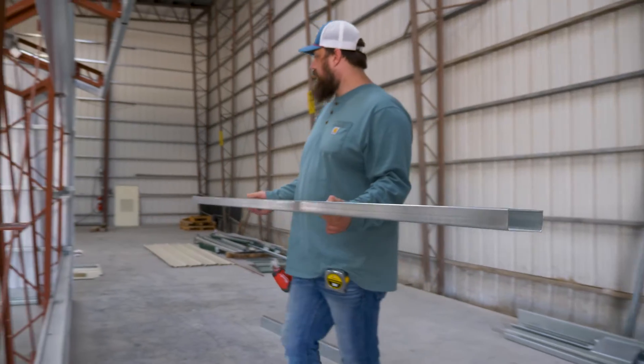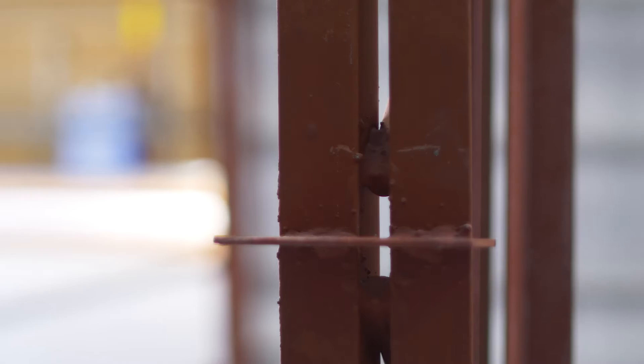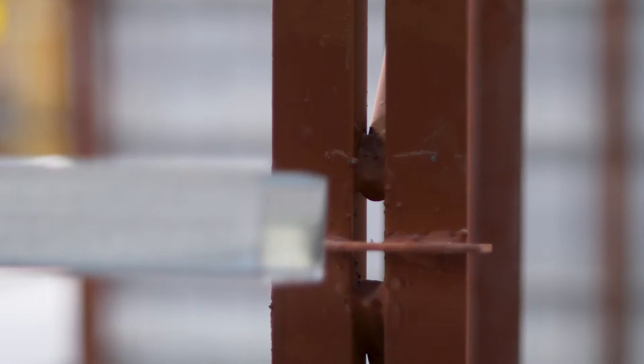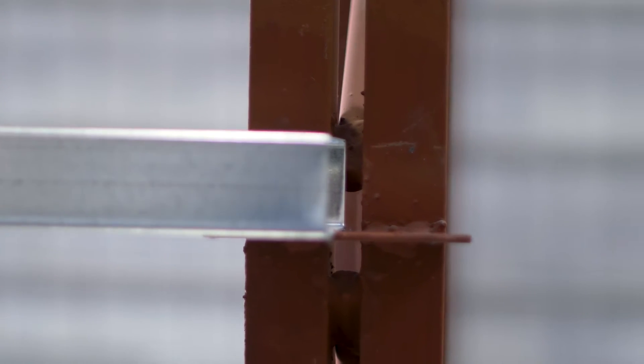Once marked, place your girt on top of the pre-welded girt clips on the columns. Because our building has an interior frame, the other end of the girt will stop at the center line of the frame at grid 2.